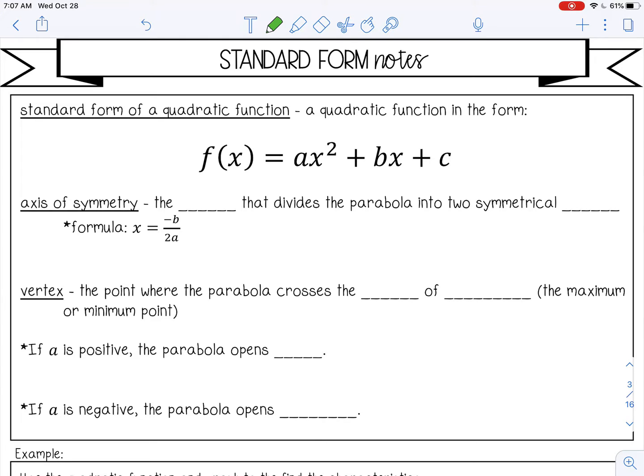The first is the axis of symmetry. That is a line that divides the parabola into two symmetrical halves. Anytime you have a parabola, it's going to be symmetrical, and there's going to be a line that will divide it right in half, and that's called the axis of symmetry. You can find that using the formula negative b over 2a.